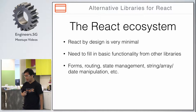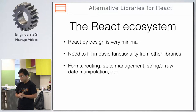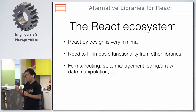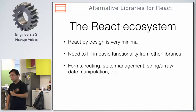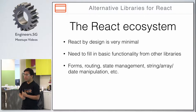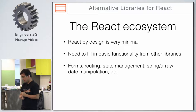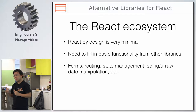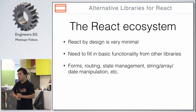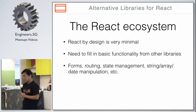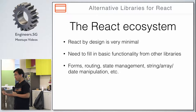A quick recap: the React ecosystem, by design, is supposed to be very minimal. It tries to do as little implementation as possible so that it can be extensible and other third-party libraries can cover the rest. Normally when you do web development, you need a lot of other tools besides just React, such as forms, form validation, and routing for single-page applications.